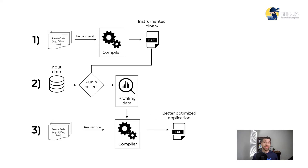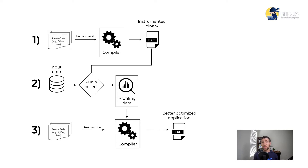Finally, as you may have guessed, we pass that profiling data to the compiler and ask it to recompile our program again, hoping to get a better optimized version of it. If you're familiar with machine learning, it is actually very similar — step two is our training phase and step three is our inferencing phase. You can view it as using the input data to train the compiler with the end goal of generating a better optimized version of the program that can operate on that particular input data.